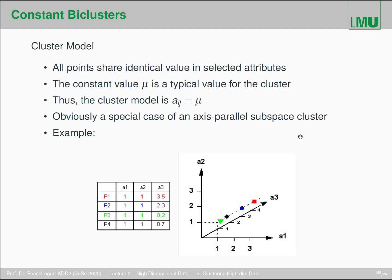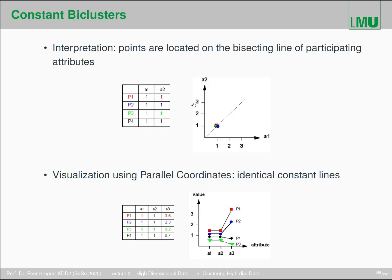The interpretation is that points are located on the bisecting line of the participating attributes. If all values have to be the same, they can be (1,1), (2,2), (3,3) in the discrete case, or (1.5, 1.5), (1.7, 1.7) — but they all have to be identical. So in the relevant subspace, they lie on a single point on the bisecting line, shown as the dashed line here.